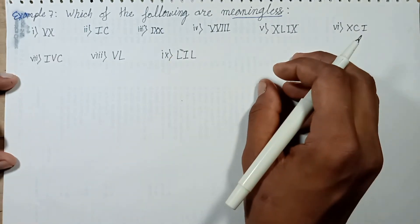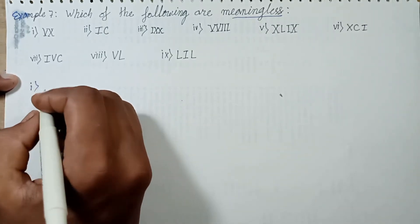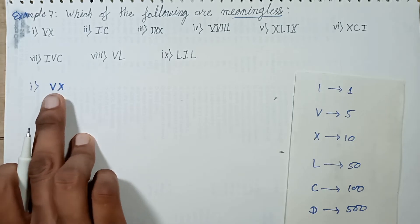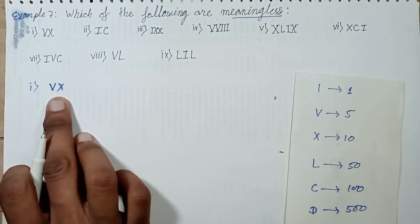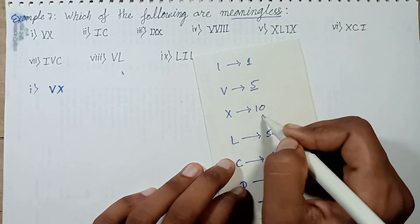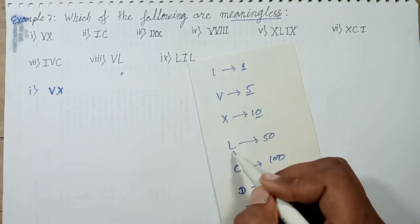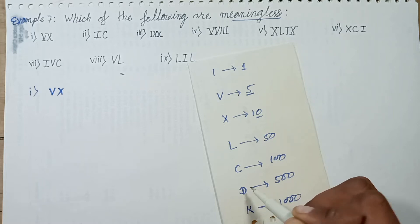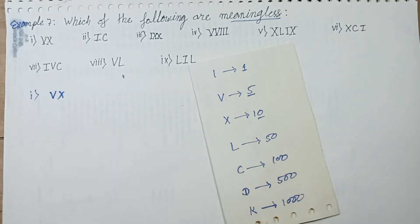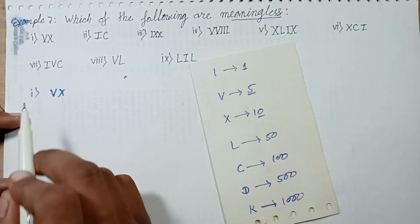Question number 1 is VX. I'll explain why this is meaningless. V represents 5 and X represents 10. Since a smaller value symbol should never be written on the left side of a greater symbol, and the left side symbol must be greater than the right — this is 10 and this is 5 — you cannot write this number.